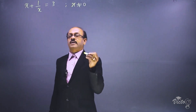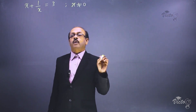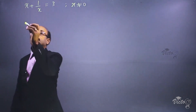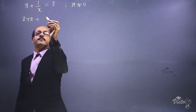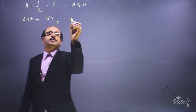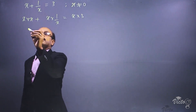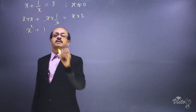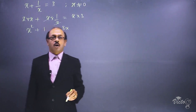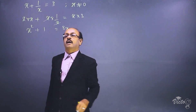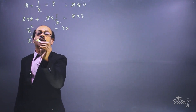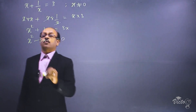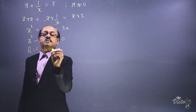We are going to make the standard form by multiplying throughout by the denominator x. So: x into x plus x into 1 by x is equal to x into 3. That gives x squared plus 1 equals 3x, since the x's cancel. Bringing 3x to the left side, the equation becomes x squared minus 3x plus 1 is equal to 0.